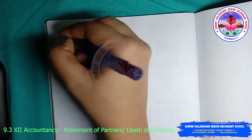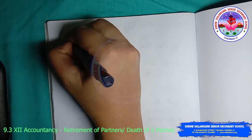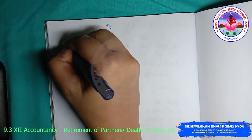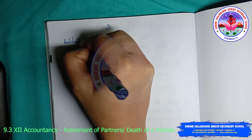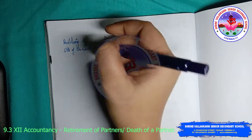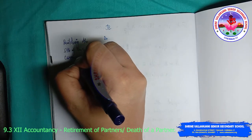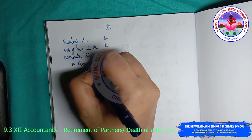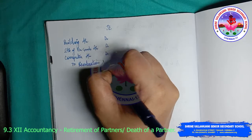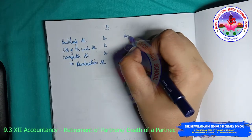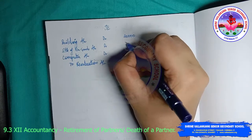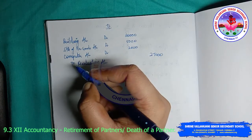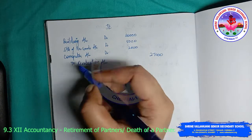Journal entry: building account debit, stock of finished goods account debit, computer account debit — to revaluation account — 20,000; 5,000; 2,000; total 27,000. Being increase in the value of assets transferred to revaluation account.